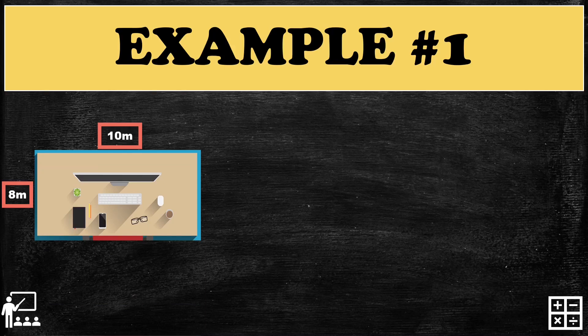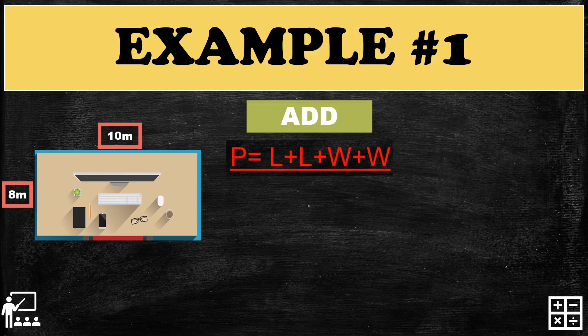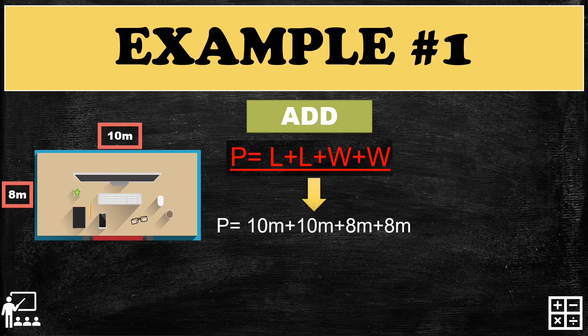Let's try an example. Here is an office table which has a length of 10 meters and a width of 8 meters. Using the addition formula: L + L + W + W — substitute the values to get 10 meters + 10 meters + 8 meters + 8 meters.